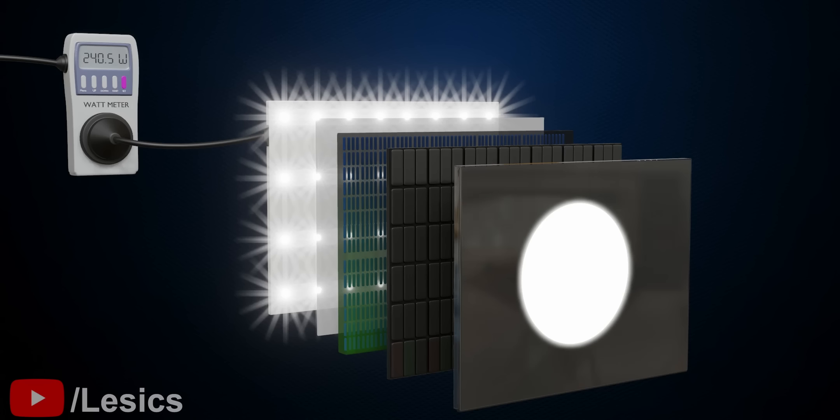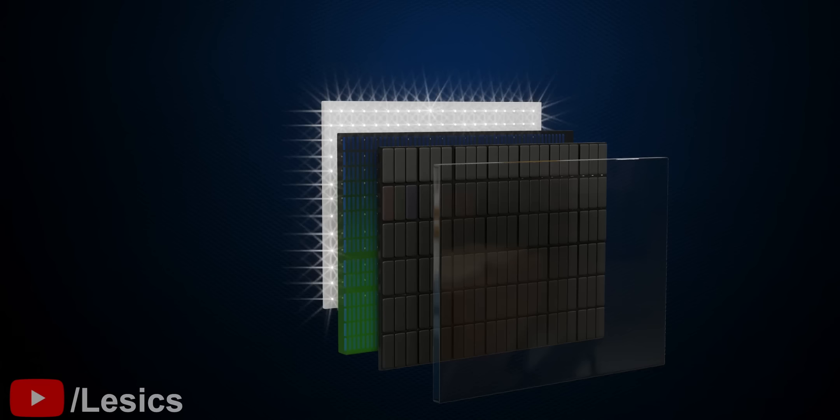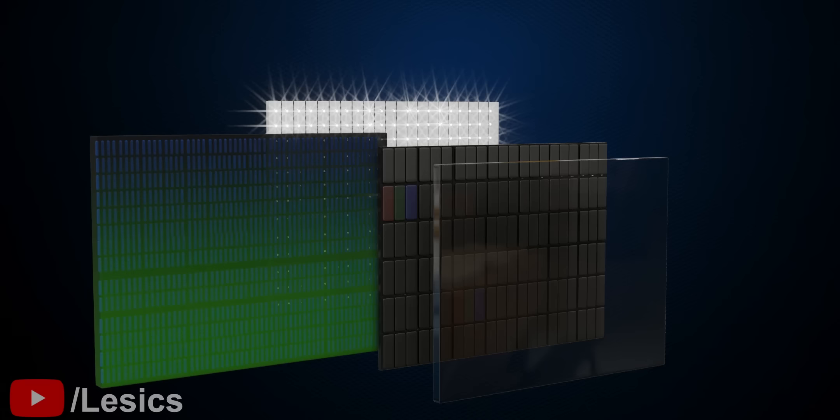What if we provide each pixel with its light source and control it? This is a great idea. Instead of using a common light source, use minute and many light sources for every pixel. With this method, the LCD sheet can also be removed.